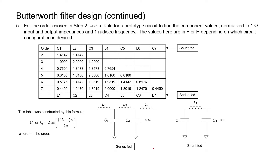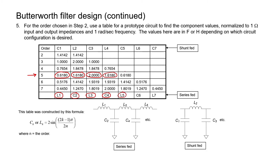For example, let's say we wanted a five-pole filter. I would refer to row five on the chart, and I can see that there are five different elements. If we want a series-fed filter with the inductor first, I refer to the lower set of labels: L1 has a value of 0.618 Henrys, C2 has a value of 1.618 Farads. L1 values are measured in Henrys, and C2 values are measured in Farads. Inductor L3 has a value of 2 Henrys, capacitor C4 is 1.618 Farads, and inductor L5 is 0.618 Henrys.